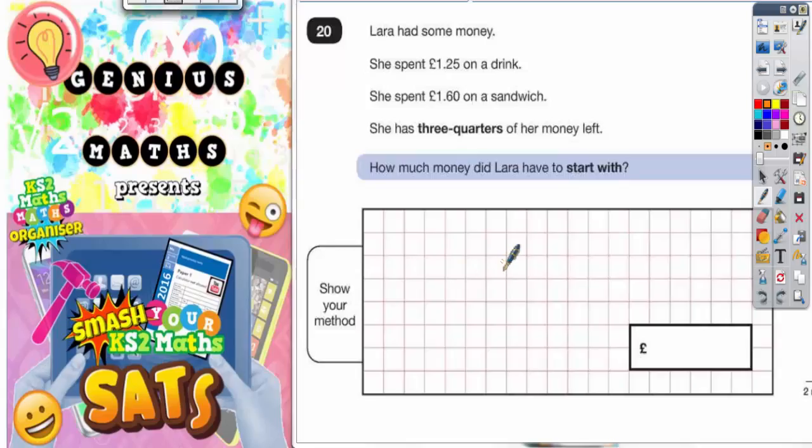Question 20. Laura had some money. She spent £1.25 on a drink and she spent £1.60 on a sandwich. She has three quarters of her money left.